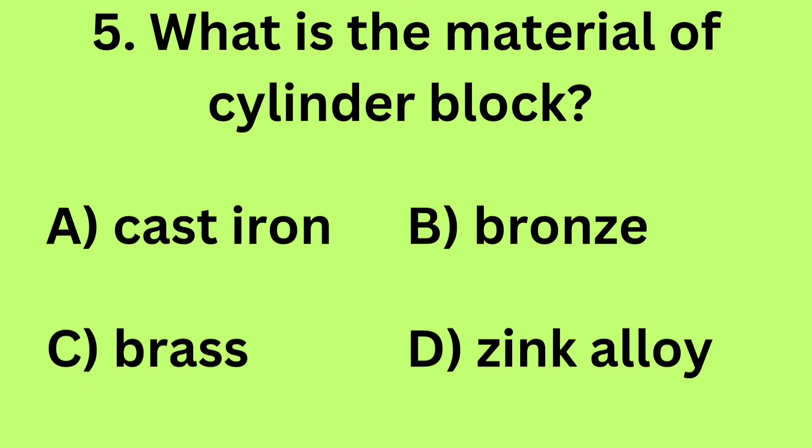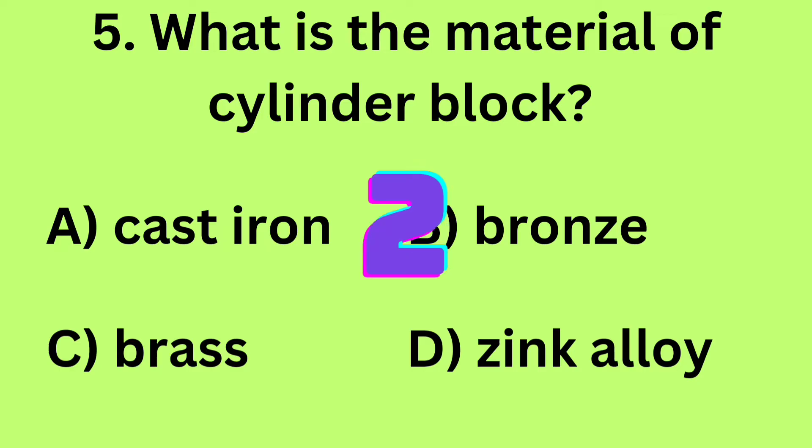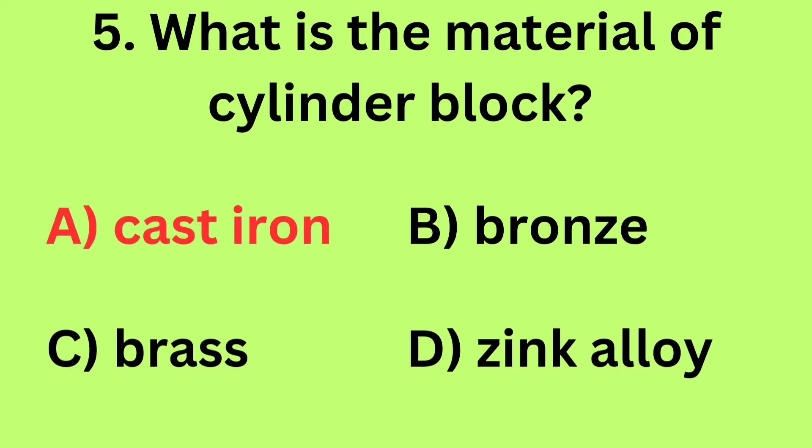Question 5: What is the material of cylinder block? A. Cast iron, B. Bronze, C. Brass, D. Zinc alloy. Answer: A. Cast iron.